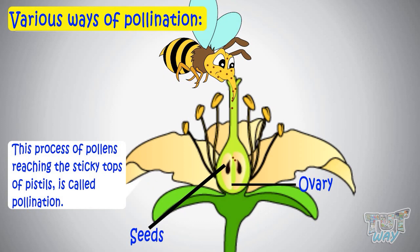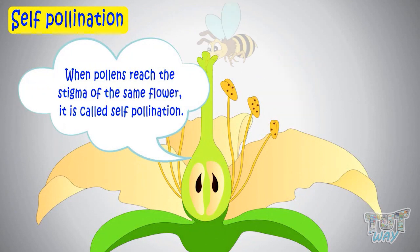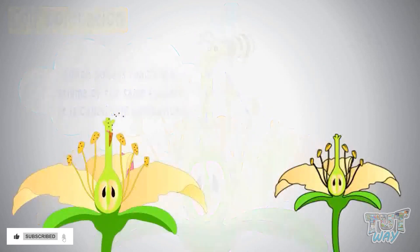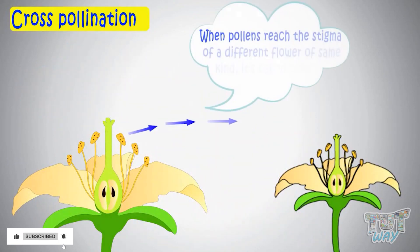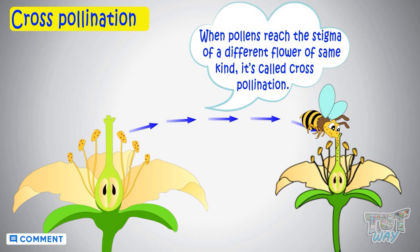Pollens may reach the stigma of the same flower or the stigma of different flowers. When pollens reach the stigma of the same flower, it is called self pollination. When pollens reach the stigma of different flowers of the same kind, it is called cross pollination.